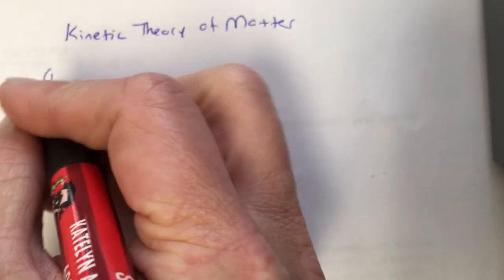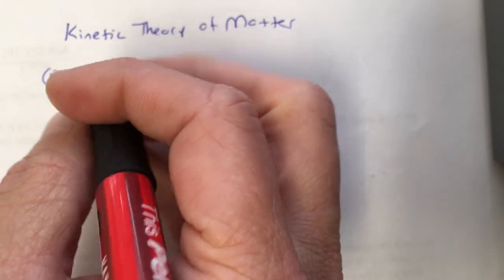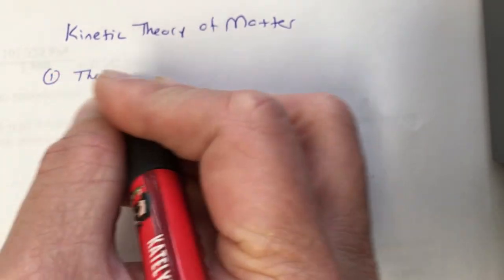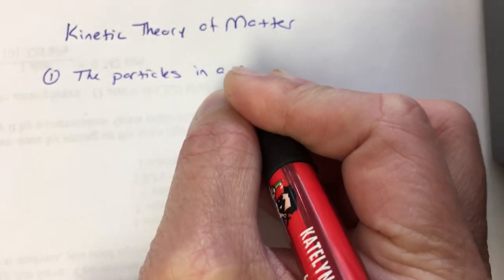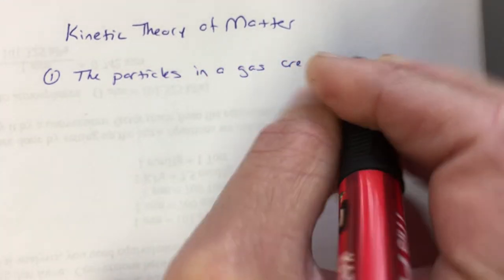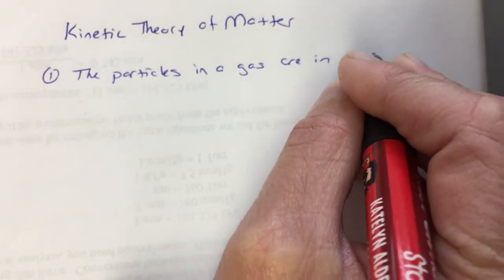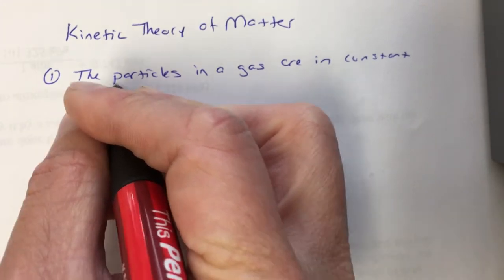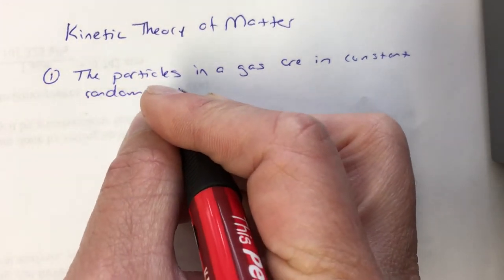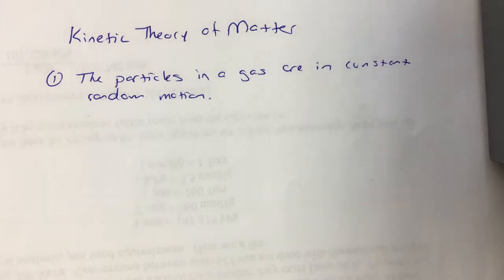First of all, the particles in a gas are in constant random motion. They never stop—that's the constant part. And the random part refers to the directions in which they're traveling. They're going all over the place.